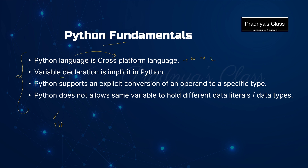The second concept is variable declaration is implicit in Python. Yes, we need not mention the data type of the variable to declare it like other programming languages. Python decides the data type of the variable based on the value assigned to it. That's why the variable declaration is implicit.